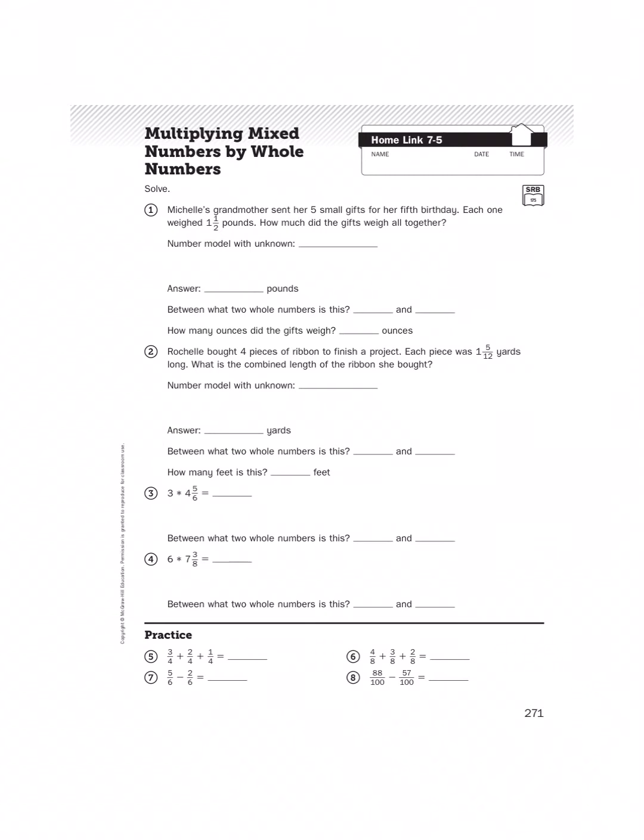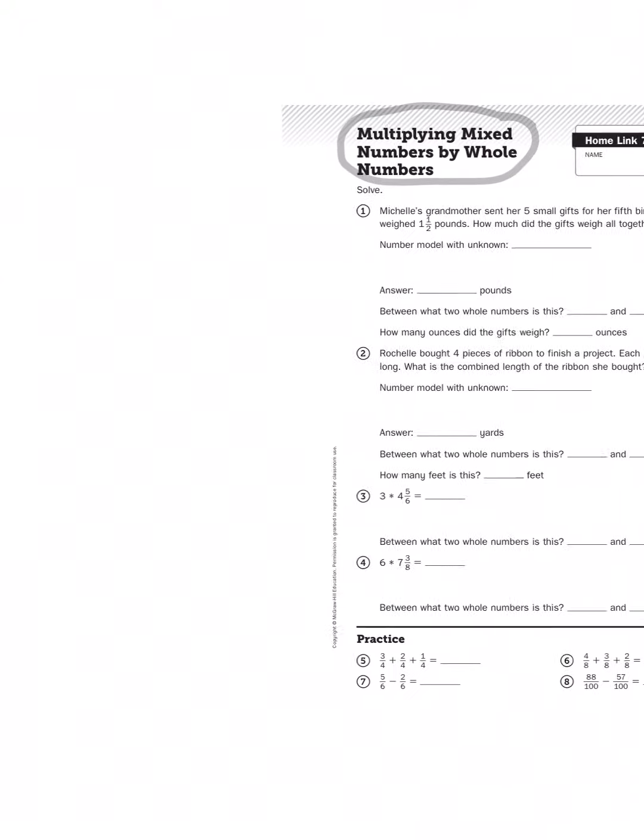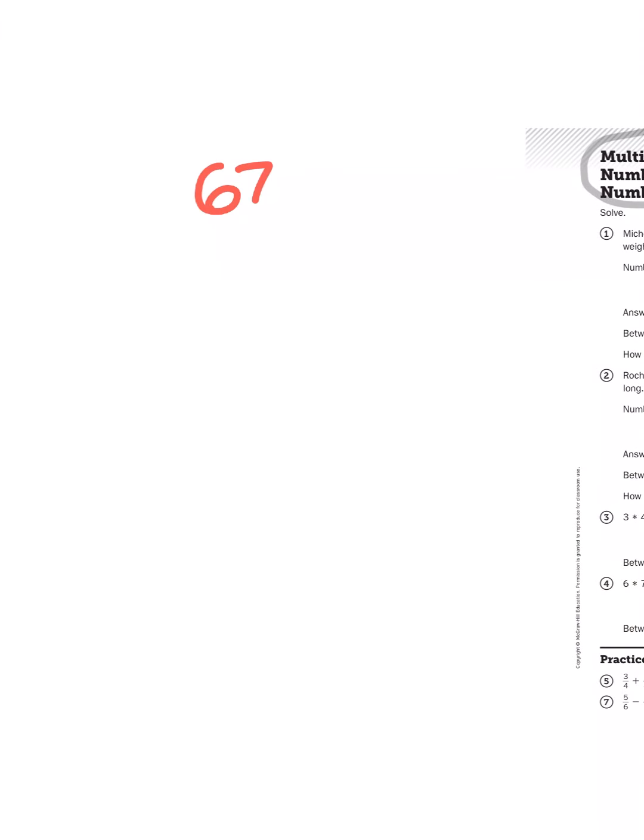So when you are presented with an assignment like multiplying mixed numbers by whole numbers, even though you may have never done that before, you know what to do. I'll give you an example. Let's say, for example, I asked you to multiply, say, 67 times 8.